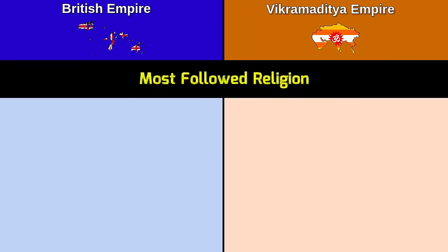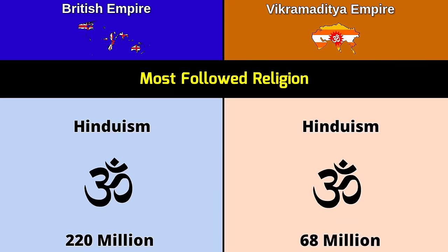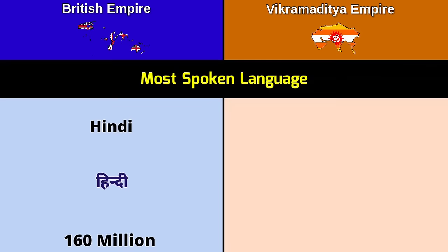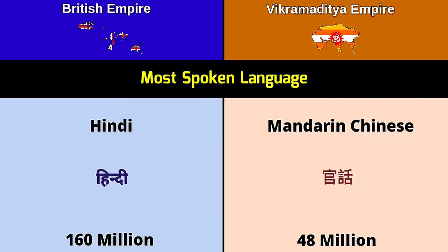Most followed religion: British Empire — Hinduism, 220 million; Vikramaditya Empire — Hinduism, 68 million. Most spoken language: British Empire — Hindi, 160 million; Vikramaditya Empire — Mandarin Chinese, 48 million.